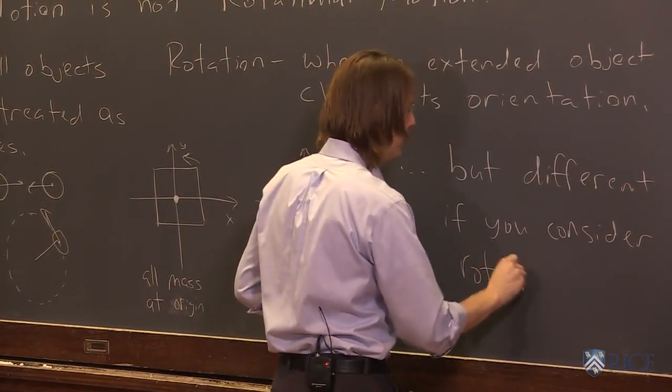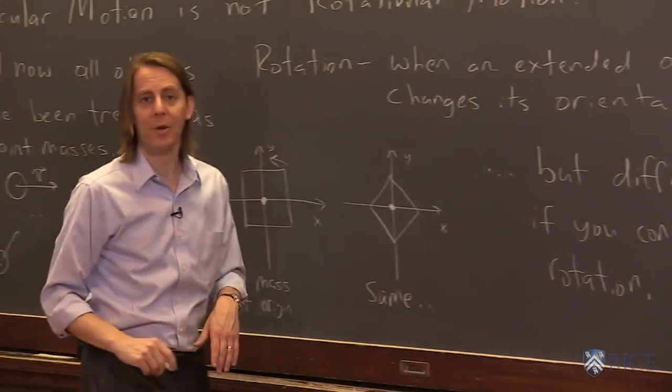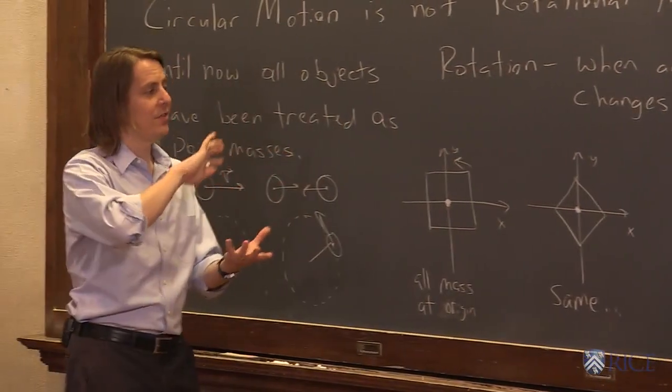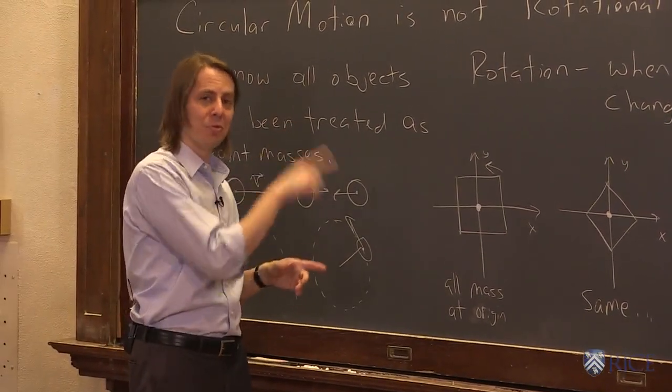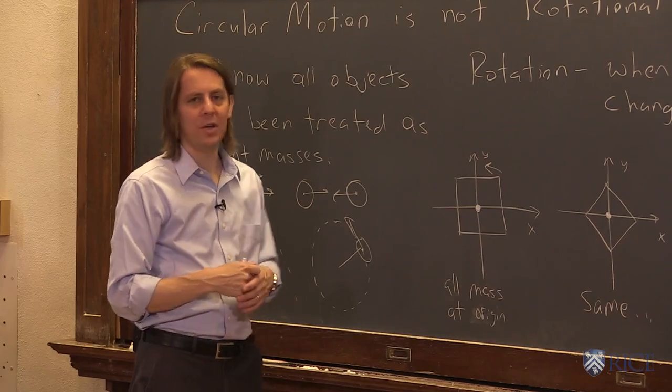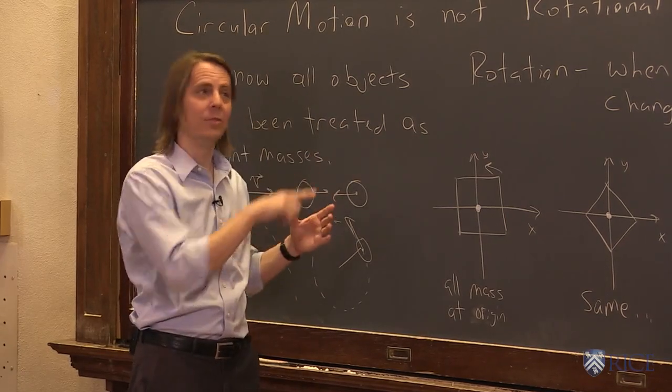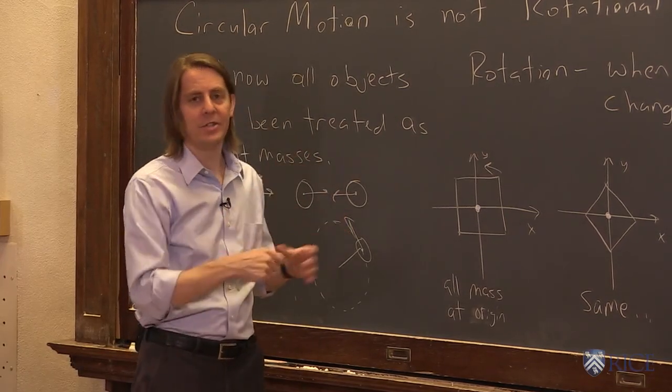So this is really what this course, part two, course two is about. It's really about objects as they rotate. It's really not about uniform circular motion. That was just sort of a way to get started because they use similar mathematics, the math of describing an angle changing in time.